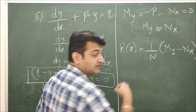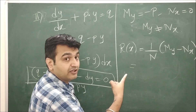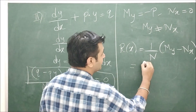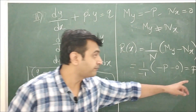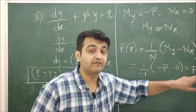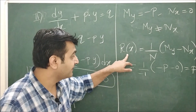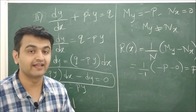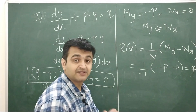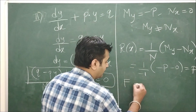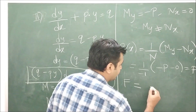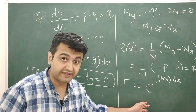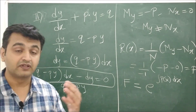Using the integrating factor formula, the expression (partial M/partial y - partial N/partial x) divided by N must be independent of y. We compute this and get P(x), which is a function of x only — hence independent of y. Therefore the integrating factor is F = e^(integral of P(x) dx).